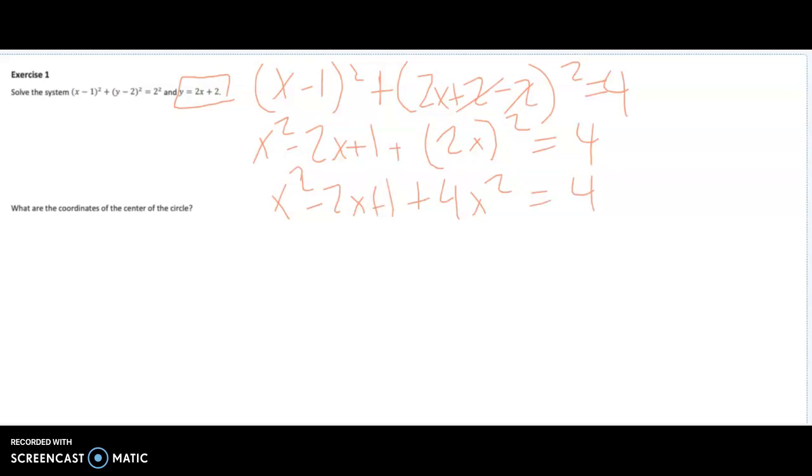Now if we combine like terms, that gives us 5x squared minus 2x. If I move 4 to this side I subtract it and that's going to give me a minus or negative 3. Now that's equal to 0. We should be able to try and error this. 5x times x, if I do negative 1, that's 5 and that's plus 3 so that's negative 2x. Okay, so that works. Alright, so x equals 1 and x equals negative 3 fifths.